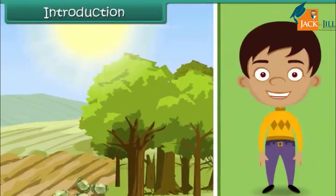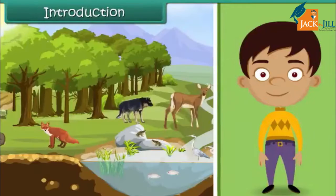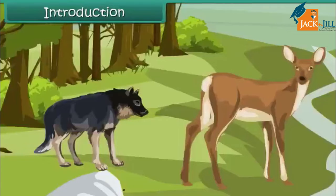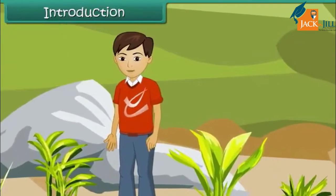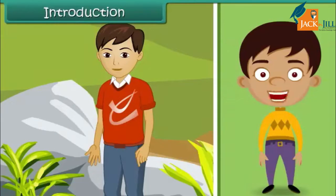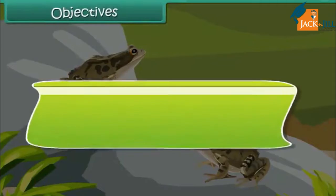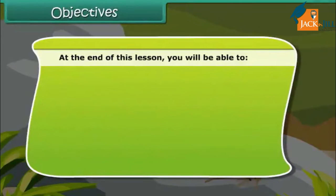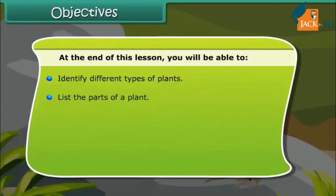Different life forms are present around us: plants, insects, animals, and of course human beings. Every living thing is made up of different body parts, and each part has a specific task assigned to it. In this lesson, we will look at the parts of a plant body and understand their functions. At the end of this lesson, you'll be able to identify different types of plants, list the parts of a plant, and identify different types of roots.